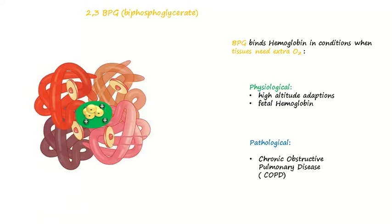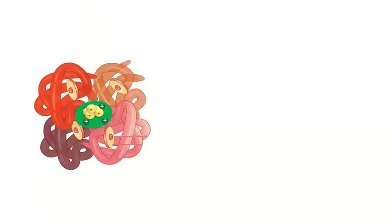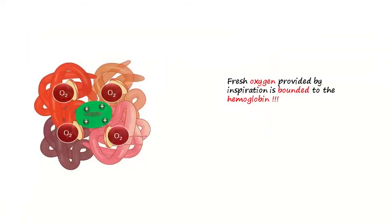Let's see the opposite part of the cycle. Here we have deoxygenated hemoglobin with bisphosphoglycerate bound in. When the bisphosphoglycerate detaches from the cavity, fresh oxygen provided from inspiration is bound to the hemoglobin. The bisphosphoglycerate cycle ends here.